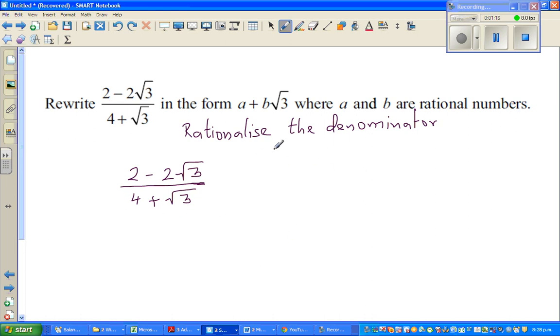And that's what they're asking you to do, to change this into a neat form without the square root. Now to do that, what you do is you multiply both the numerator and the denominator by the conjugate of this. Conjugate is, in other words, the additive opposite of this.